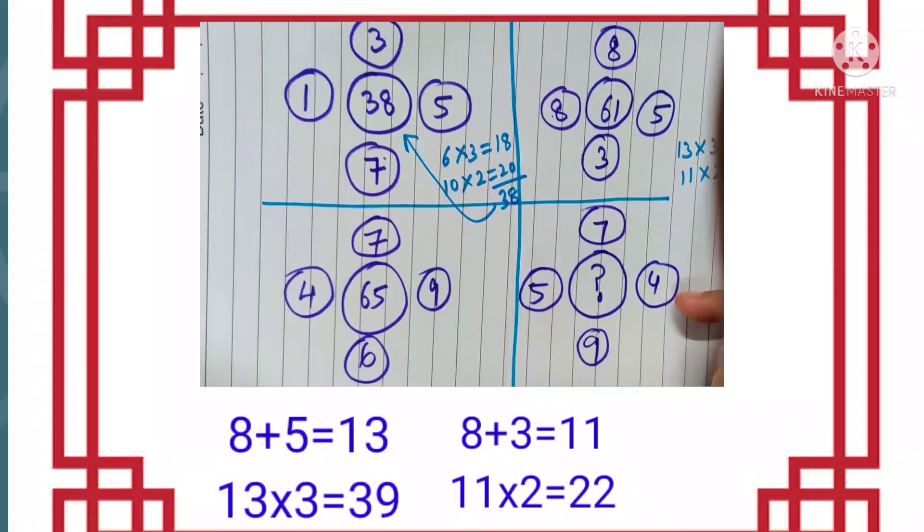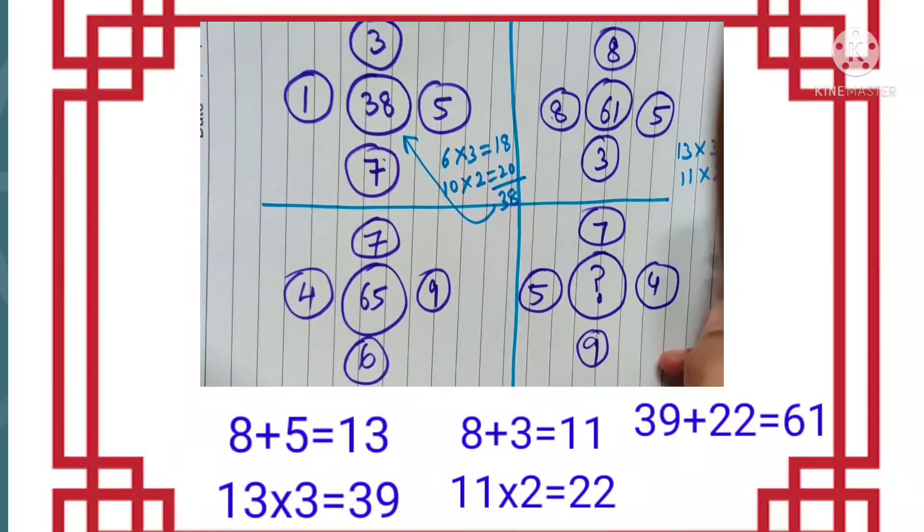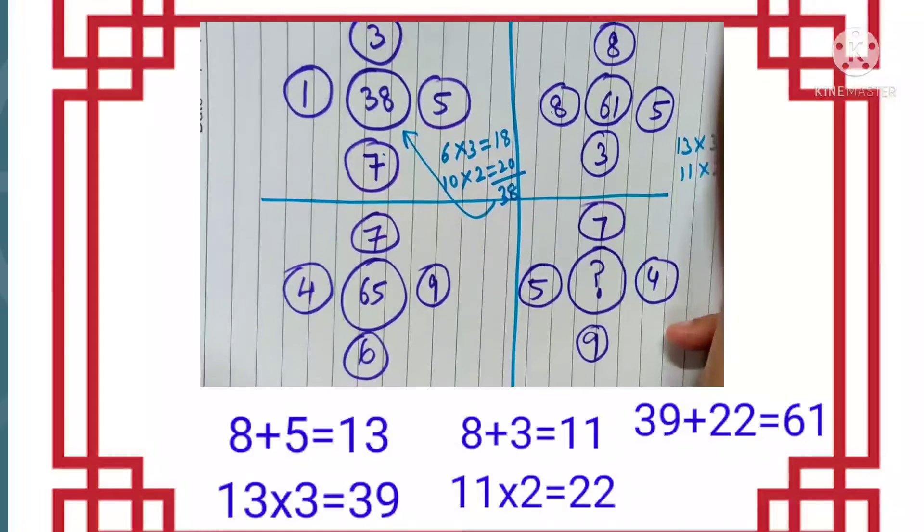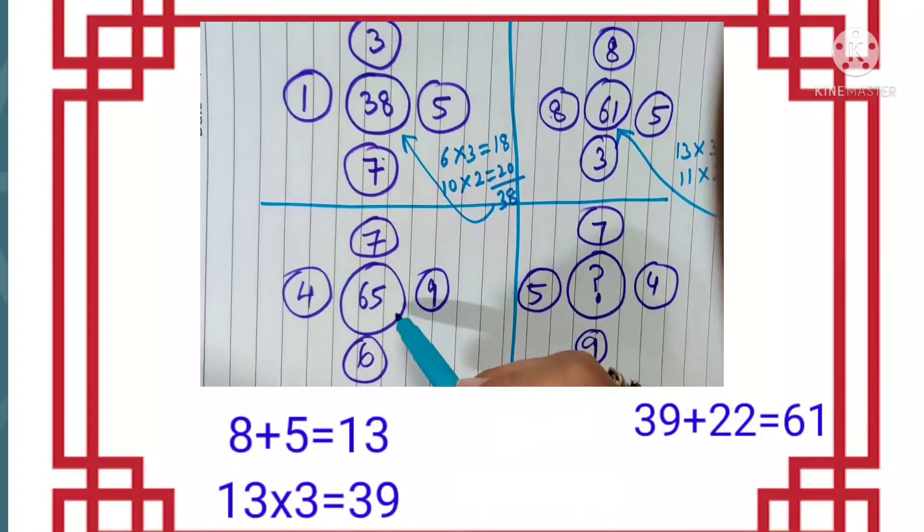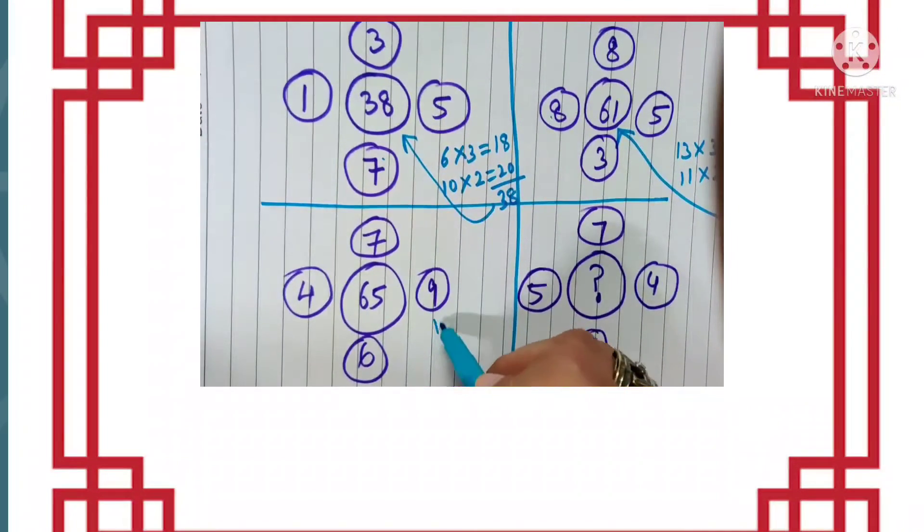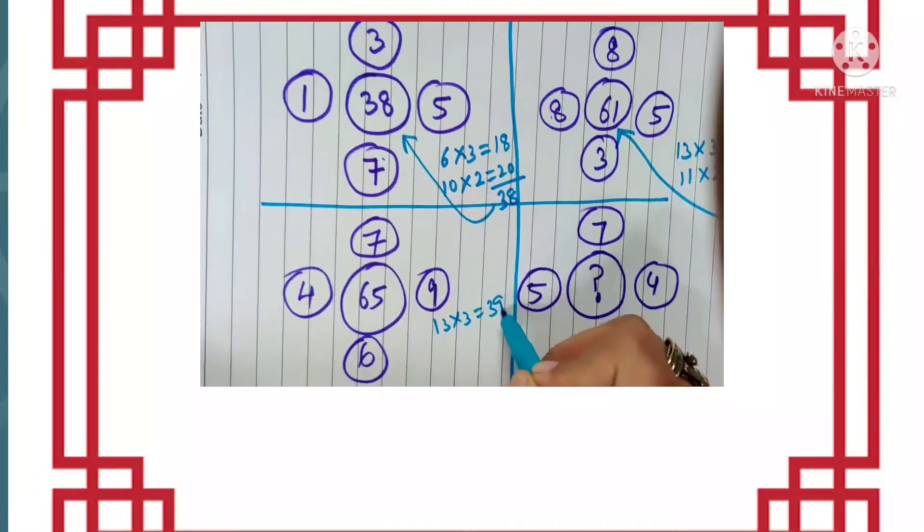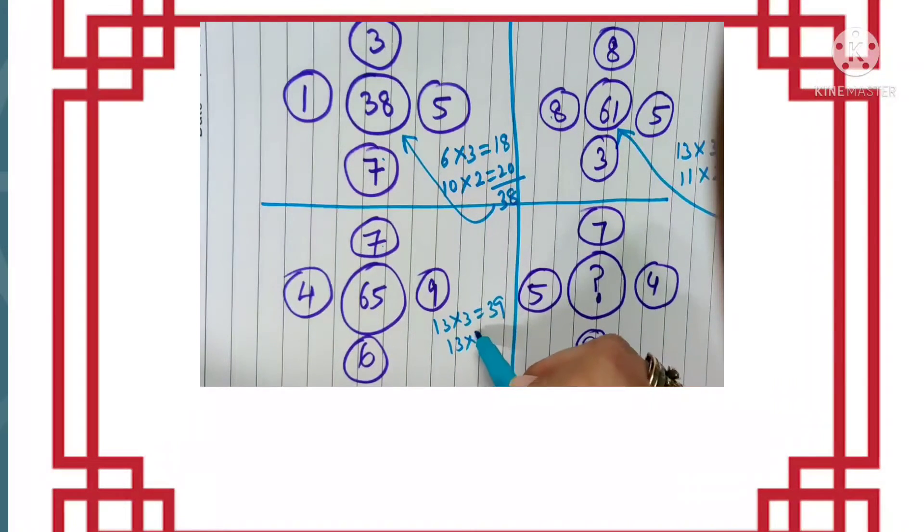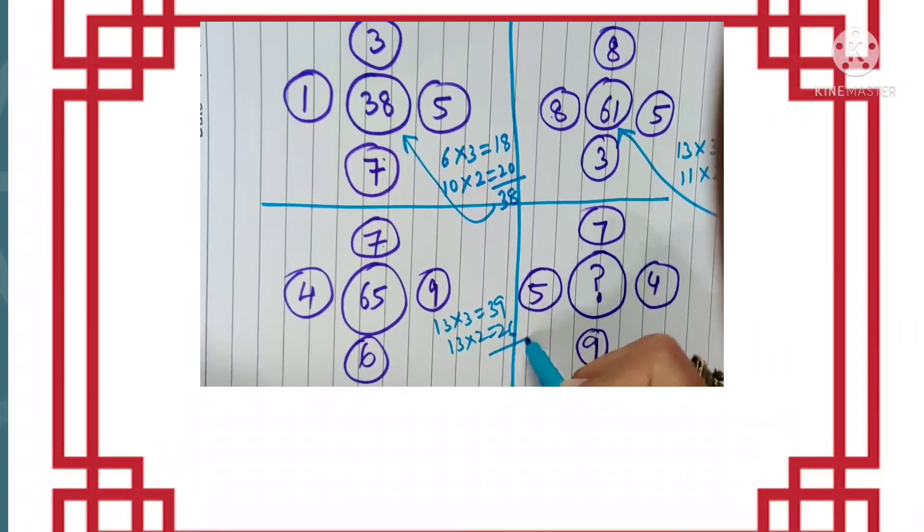Which is 39. Then 11 plus 11 is 22. 39 plus 22 is 61. Yes, it works! Now see this one: 4 plus 9 is 13, and 13 into 3 is 39. 7 plus 6 is 13. 13 into 2 is 26.